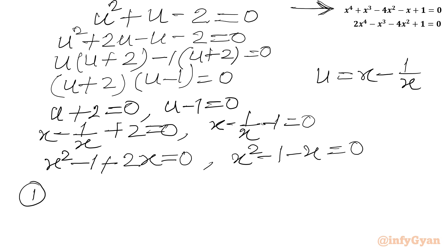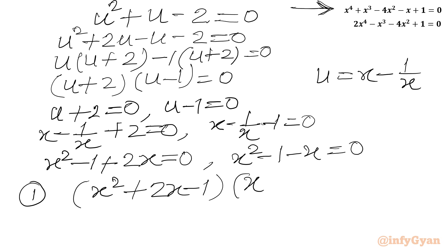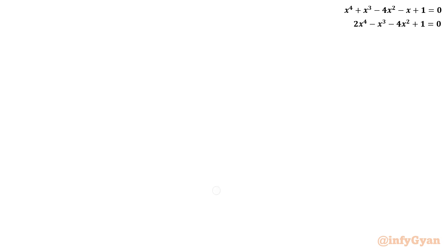The left-hand side of equation 1 factors as (x² + 2x - 1)(x² - x - 1) = 0. Now we will factorize equation number 2.